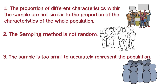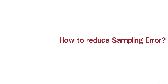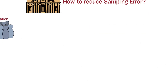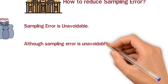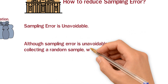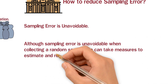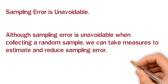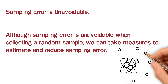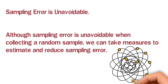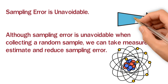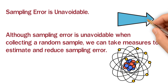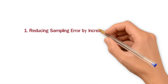The next question is: how to reduce sampling error? The first and most important thing is that sampling error is unavoidable — we cannot avoid it. Although sampling error is unavoidable when collecting a random sample, we can take measures to estimate and reduce it. The first measure is to increase the size of your sample by selecting more subjects to observe.